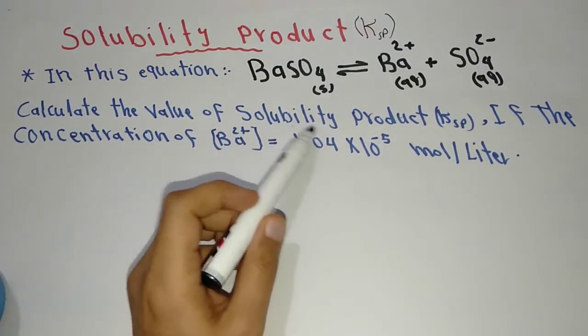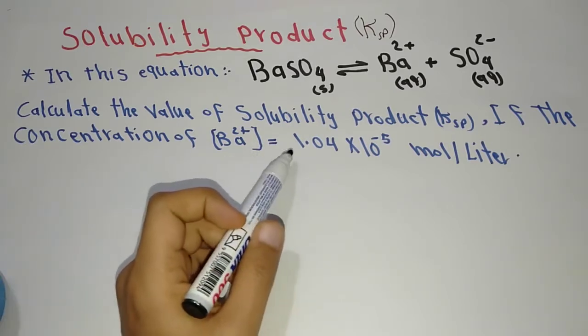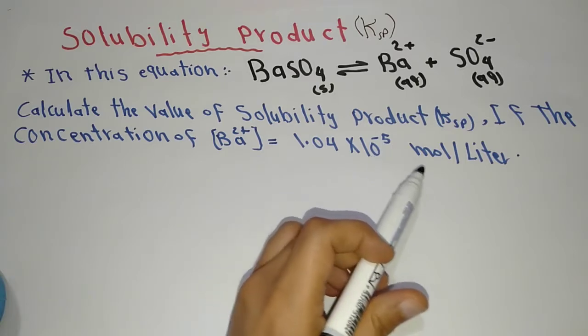Calculate the value of solubility product Ksp if the concentration of barium is 1.05 × 10^-5 mole per liter.